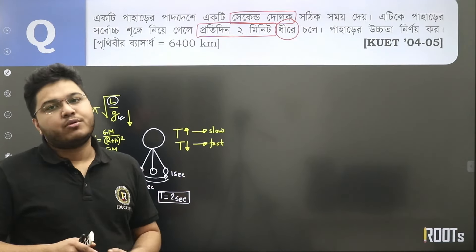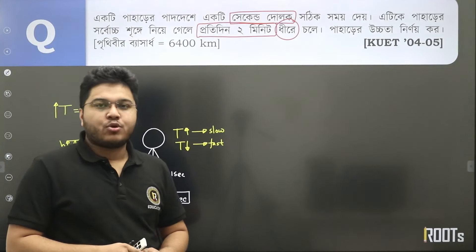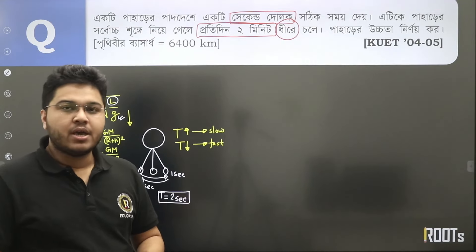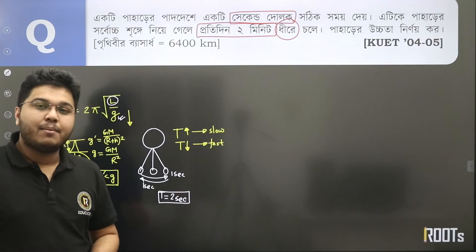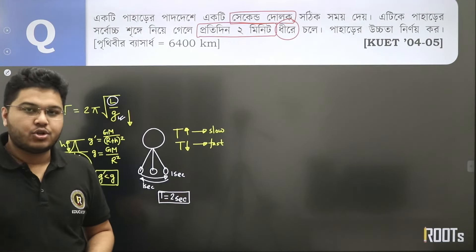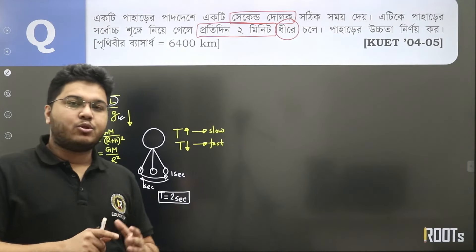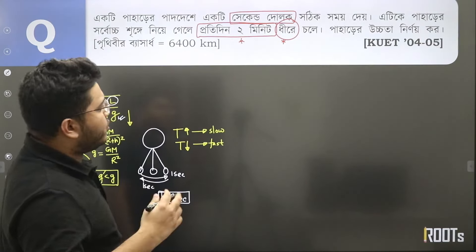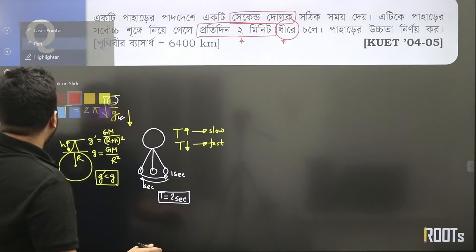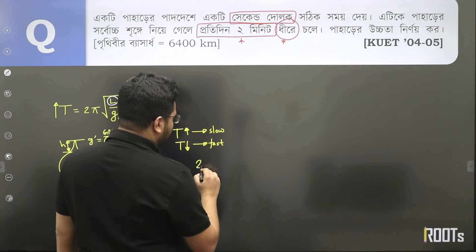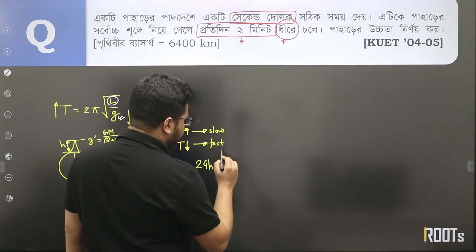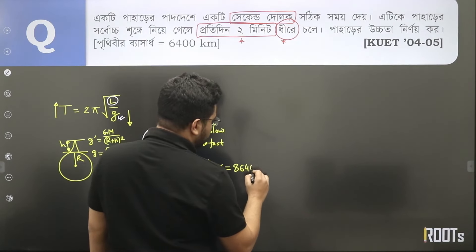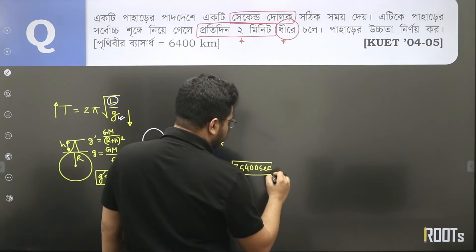এমন এখানে সলে একটা কীভাবে দেওয়া আছে, এটা কি প্রতি দিন একটা দেওয়া আছে না, কি প্রতি এটা কতো সেকেন্ড ধীরে চলে, অথবা কোথাও কোথাও কতো এমন বলতে পারে — প্রতি ছয় ঘন্টা, এটা প্রতি ১০ ঘন্টা, এটা সমথিং সেকেন্ড ধীরে চলে বা দ্রুত চলে। তামি, তোমাদের কতো বেশি ছে — ৮৬৪০০ সেকেন্ড। এই নাম্বারটা খুব ইম্পর্ট্যান্ট।